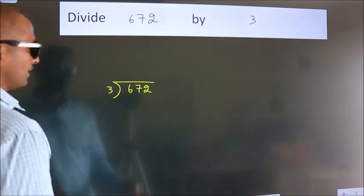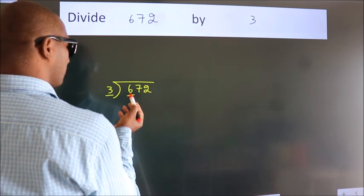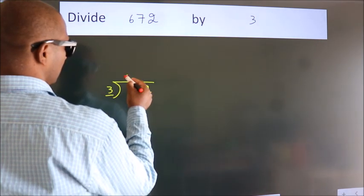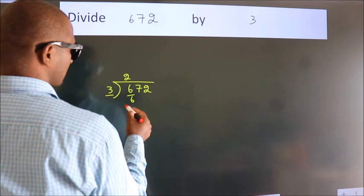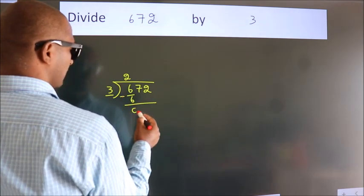Next, here we have 6, here 3. When do we get 6? In the 3 table. 3 times 2 is 6. Now, we should subtract. We get 0.